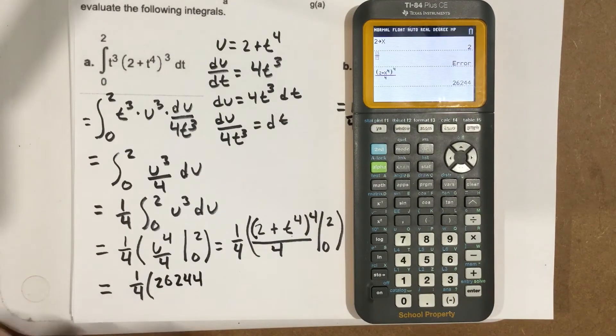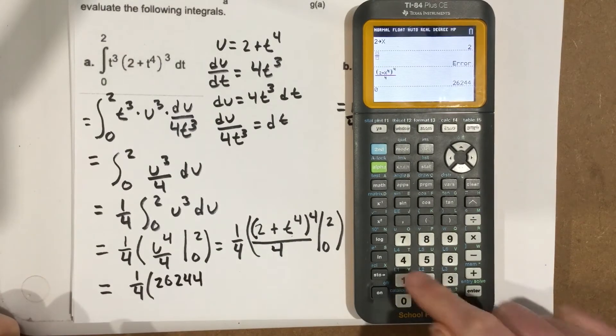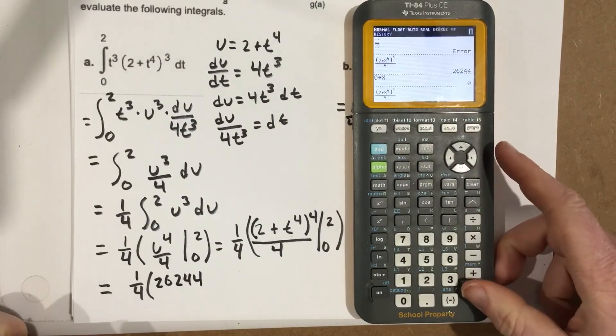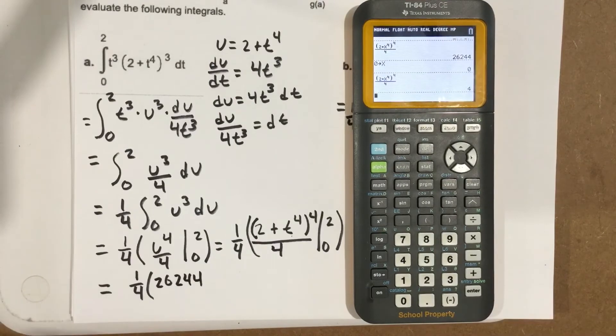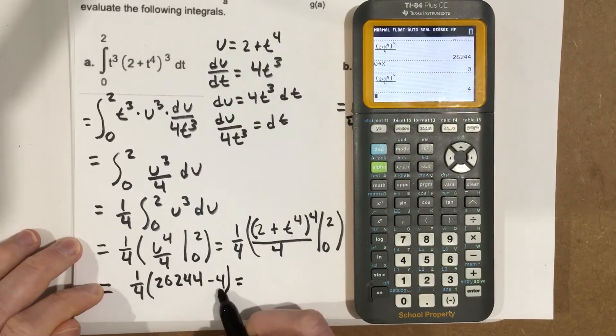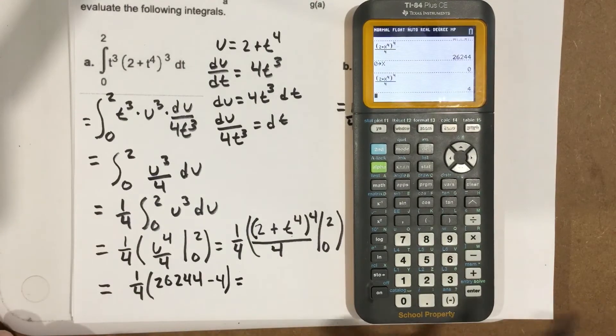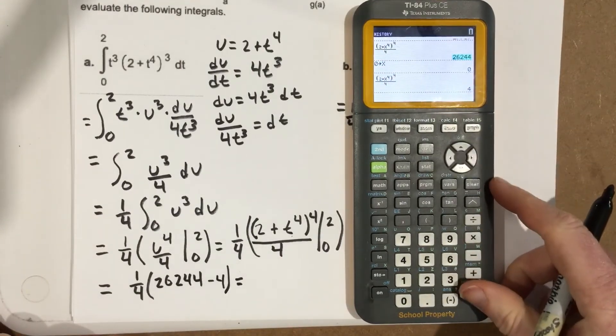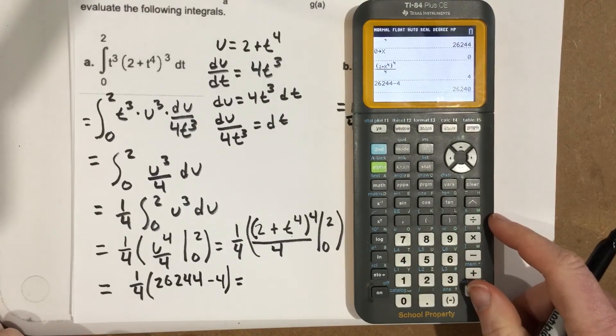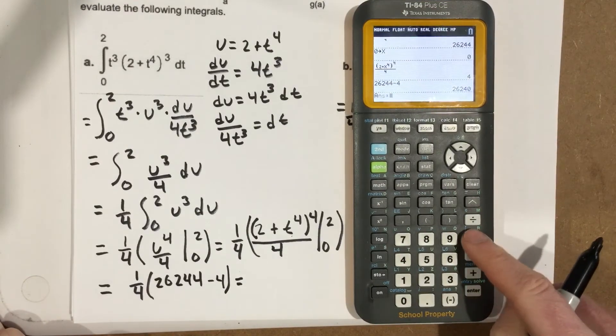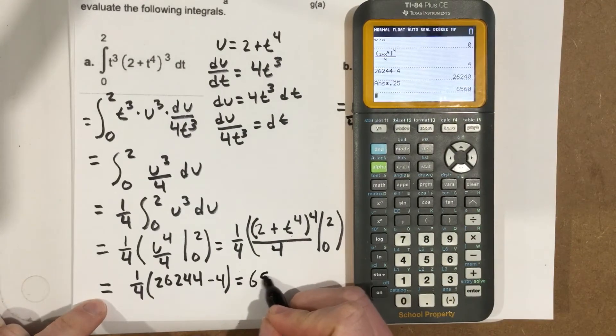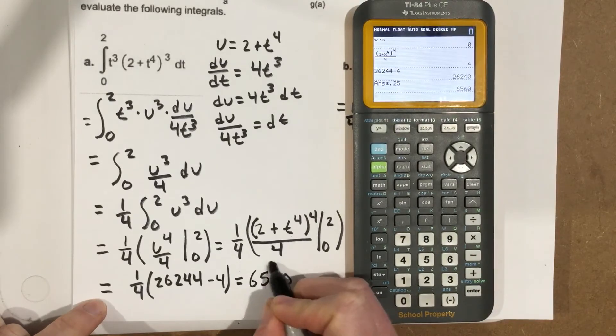Now, when I plug in 0, I can go 0, store it as x, go up here, click on that, I get 4, so I end up with minus 4, so this minus 4 times 1 4th, so I'm going to go up and grab this, minus the 4, and then I'm going to take it times 0.25, which is 1 4th, and I end up with 6,560 as my answer for that integral.